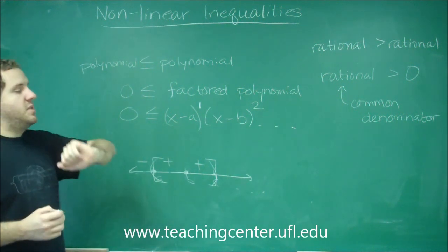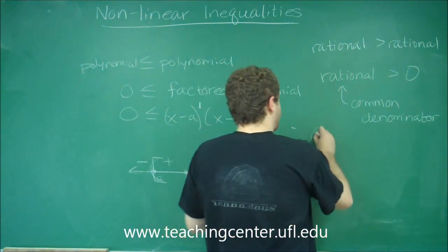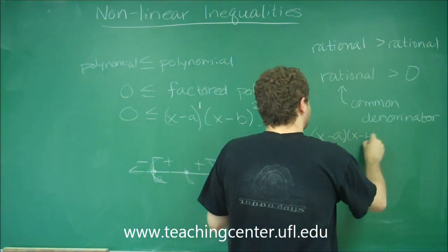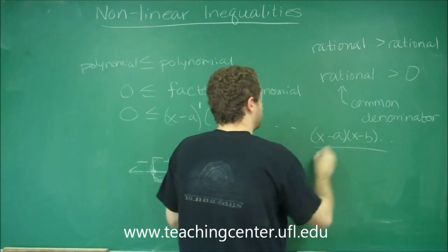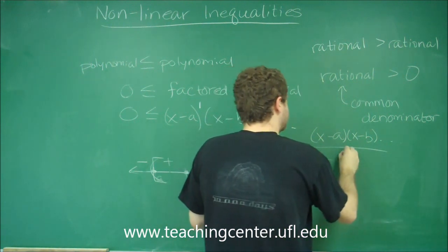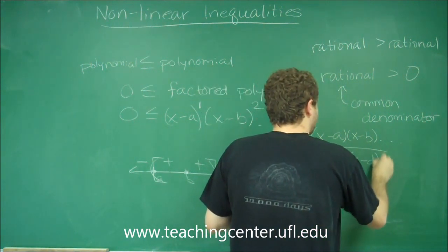Then you're basically going to do the same thing. You're going to factor the top and the bottom, so x minus a, x minus b, etc. On here you'd have x minus c, x minus d, on and on and on.